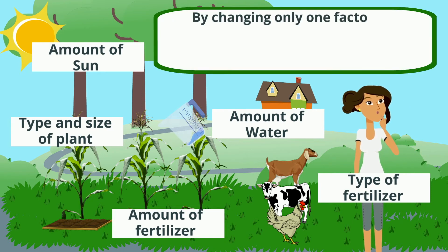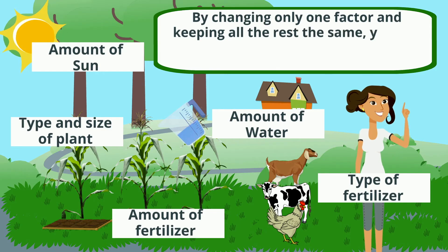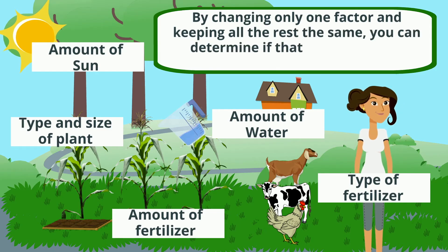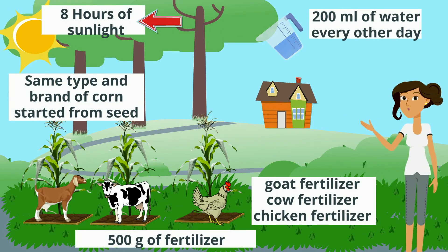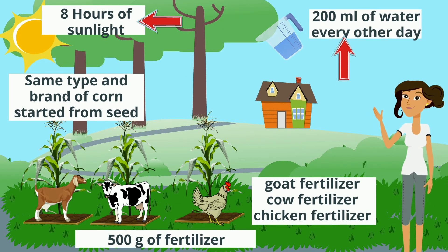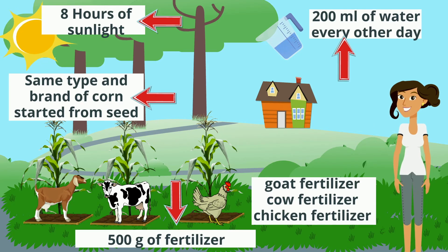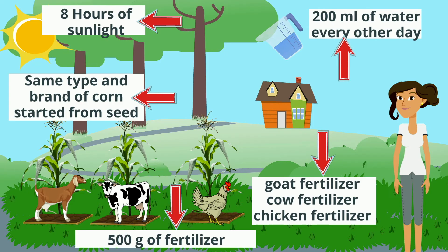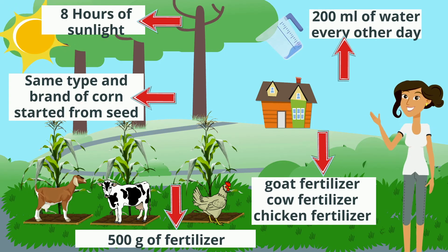By changing only one factor and keeping all the rest the same, you can determine if that factor makes a difference. Jennifer will give the corn 8 hours of sunlight each day, 200 ml of water every other day. She'll use the same type and brand of corn started from seed, planted in 500 grams of fertilizer each, and use goat fertilizer, cow fertilizer, and chicken fertilizer.